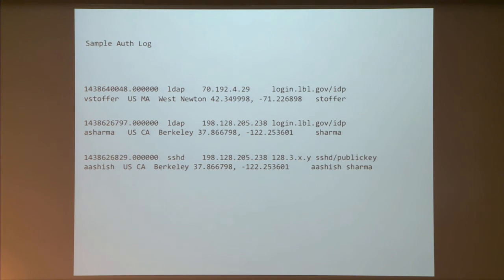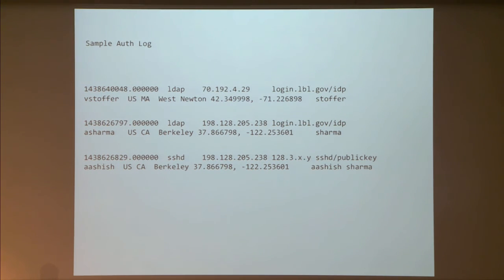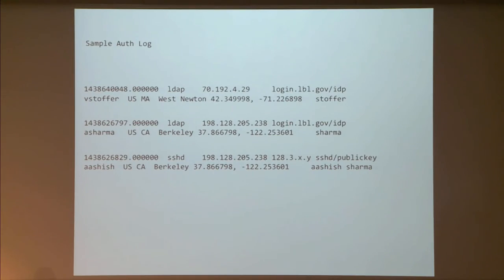The auth log shows who logged in when — in this example, someone logged in using Google Auth and SSH. If a machine gets compromised and you need to answer how many users had accounts on that machine, instead of hunting down an administrator who may not know, you can go to the auth data and find a complete list of users who authenticated to that machine.